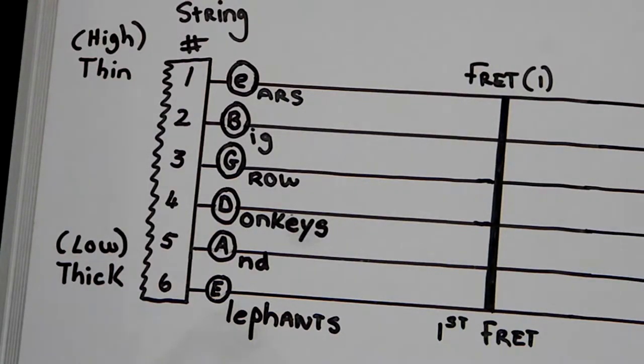So, the strings are numbered from the thinnest one to the thickest, six. Okay, so where you see I have a high thin, that means it is the high E at string number one. And the low E note, open note, is the sixth string.